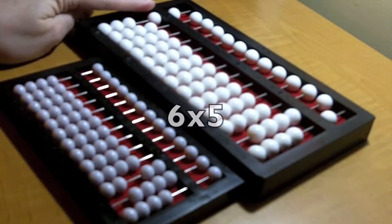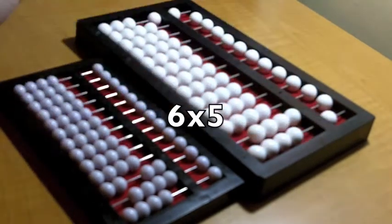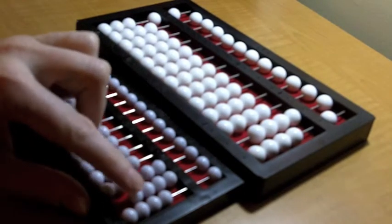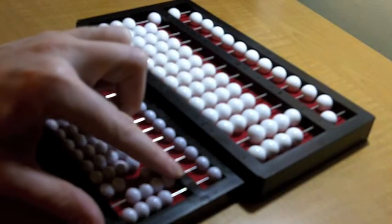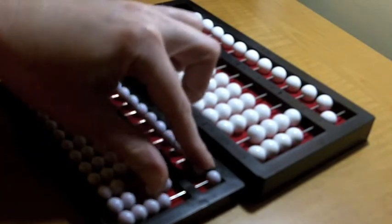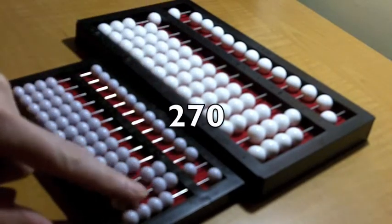Next, I'm going to say 6 times 5 is 30, so I'm going to say 40 plus 30 is 70. So I'm going to clear the 40 and set a 70. So my answer is 270.